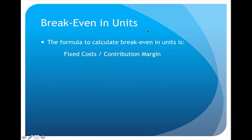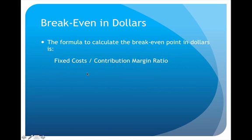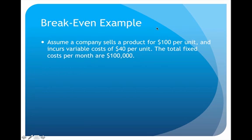To calculate a company's break-even point in units, use the formula: fixed costs divided by contribution margin. To get the answer in dollars rather than units, use: fixed costs divided by contribution margin ratio. Either way you use fixed costs — you just use a different denominator depending on what format you want the answer in.